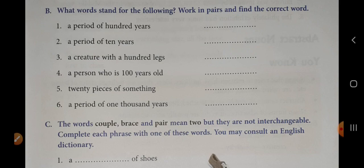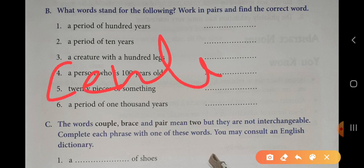Number 1, a period of 100 years. What is the period of 100 years? Century. And the spelling of century is C-E-N-T-U-R-Y. Century.